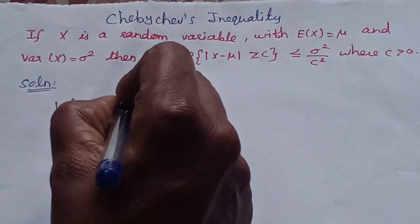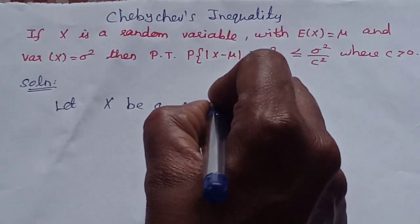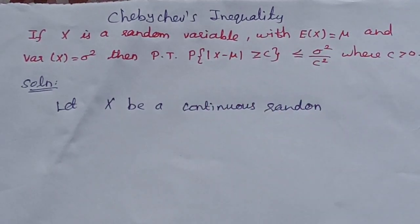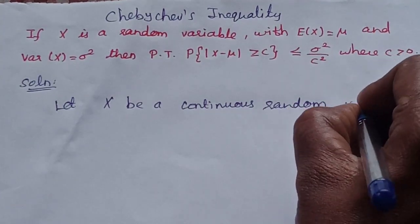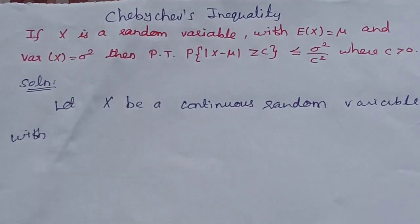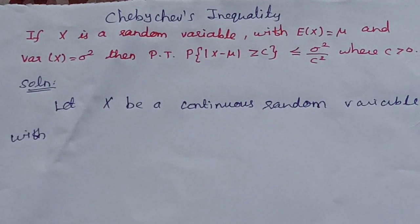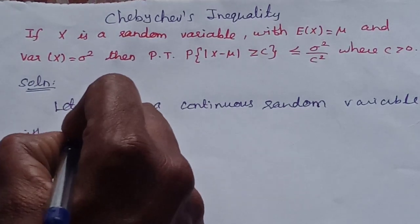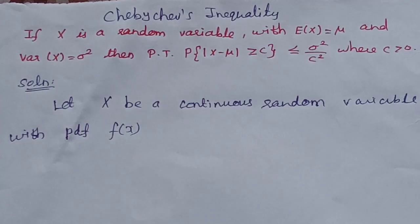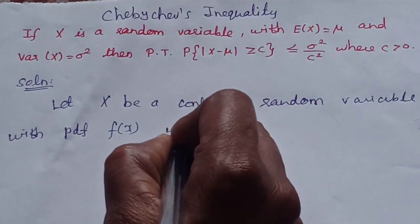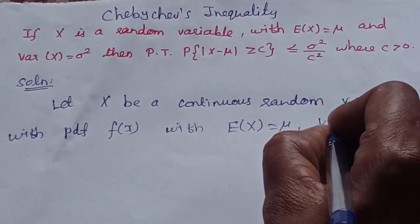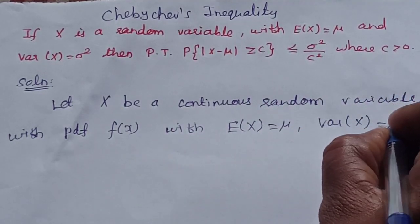Let X be a continuous random variable. If we have an expectation or variance, then we use the probability density function f of x. With mean: E of X equals mu. And variance of X equals sigma square.